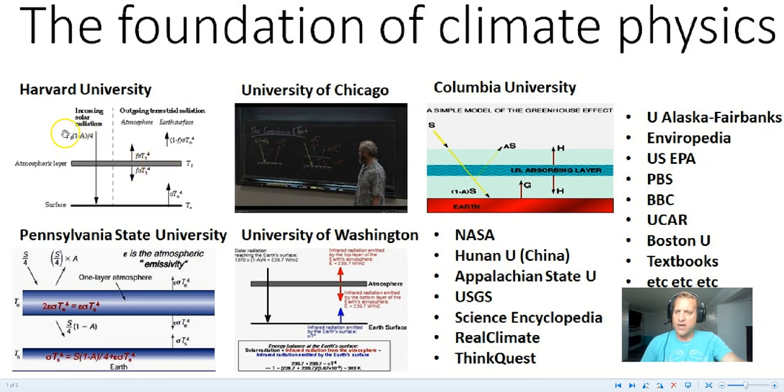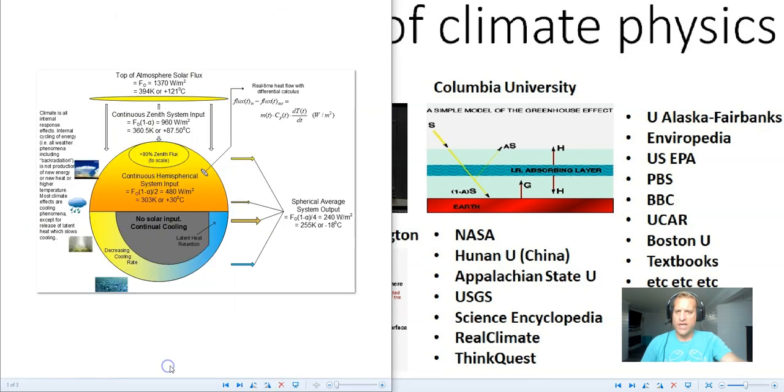Now what that divide by 4 means, what it shows mathematically, is that they're taking the input and they're spreading it over the entire surface area of the earth at once. That's what they're doing with the solar input - they spread it over the entire surface area of the earth at once. And it is that number there, that person is right, Lars was right, it's that number when you convert it to a temperature.